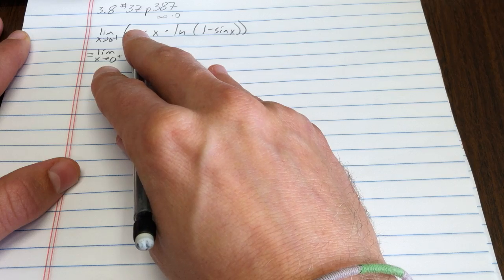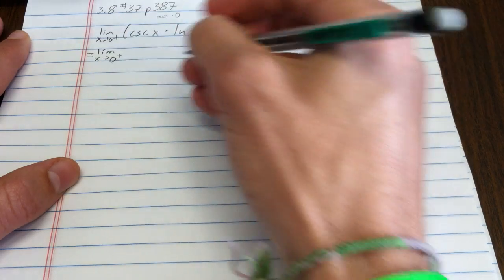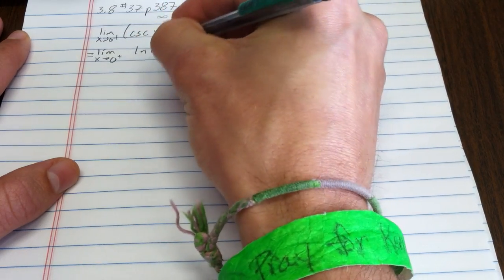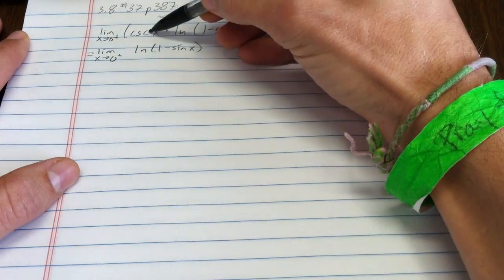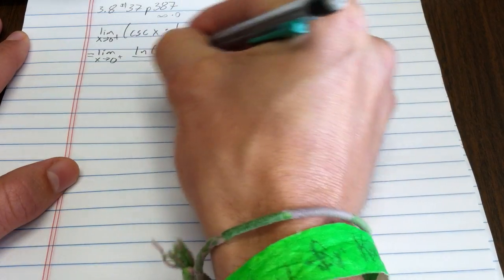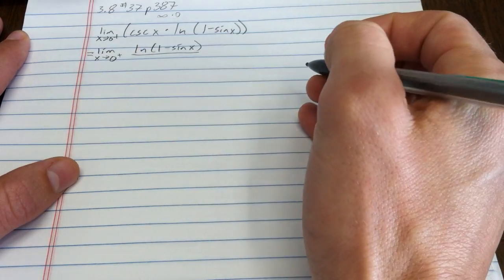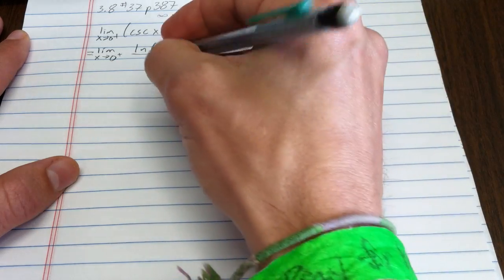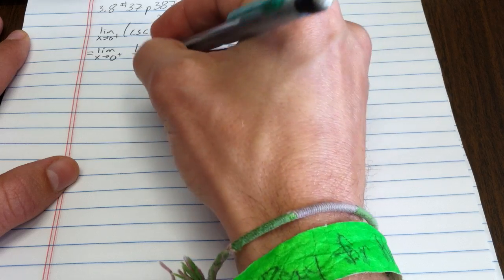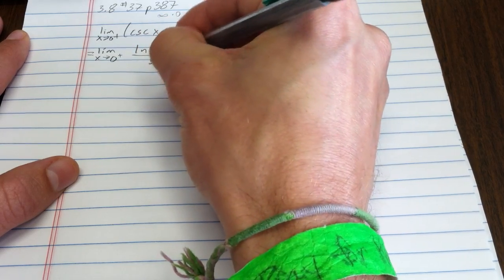If I put cosecant in the denominator, so I left this in the numerator, having something in the numerator would be the same as having 1 over cosecant in the denominator. But why write 1 over cosecant when cosecant itself is just sine? 1 over cosecant is really just sine x.